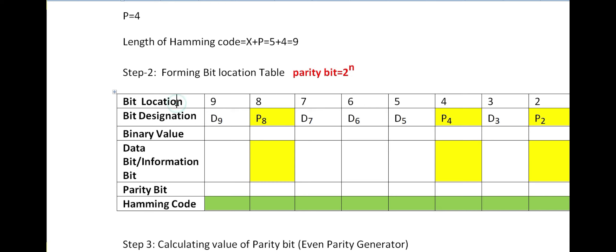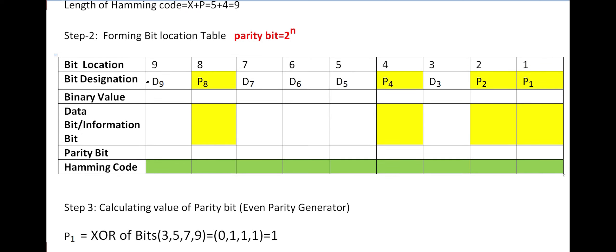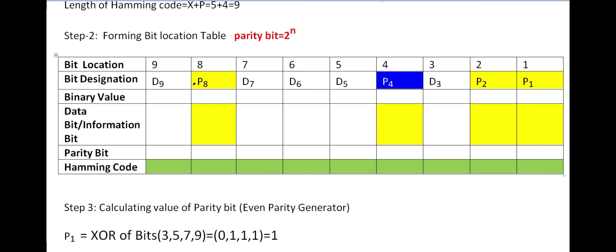The first row is the bit location. Since we have 9 bits, I list positions from 9 down to 1. For bit designation, we first fill the parity bits: position 1 (2^0) is P1, position 2 (2^1) is P2, position 4 (2^2) is P4, and position 8 (2^3) is P8. The remaining positions — 3, 5, 6, 7, 9 — are data bits, labeled D3, D5, D6, D7, D9.